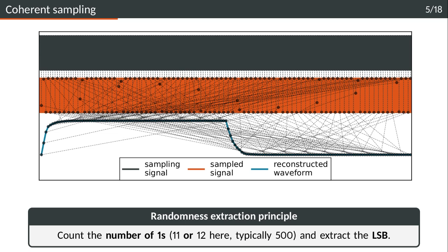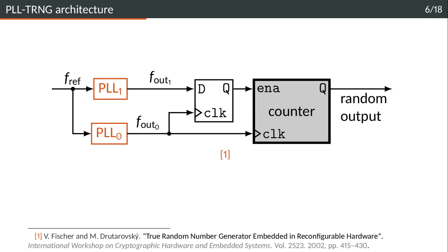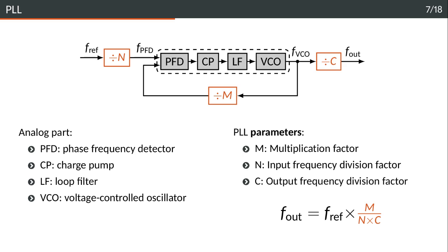In order to implement this we use the following architecture proposed in 2002. We have the reference frequency on the left which is fed to both PLLs, PLL1 and PLL0. PLL0 is used to sample PLL1. We have the resynchronization flip-flop in the middle and then the counter, so the random output is usually the LSB of this counter.